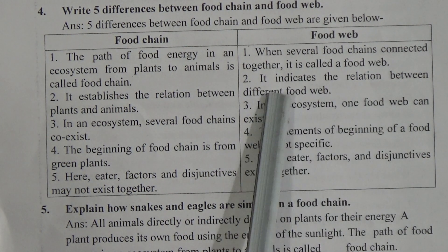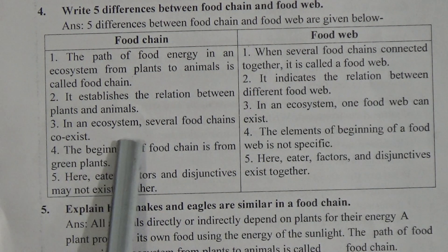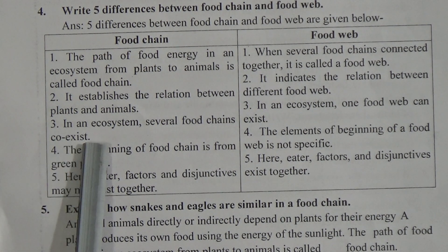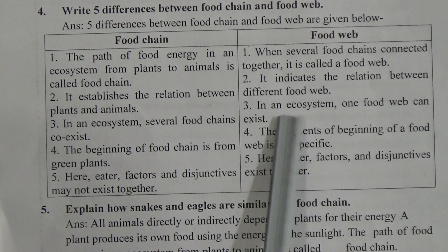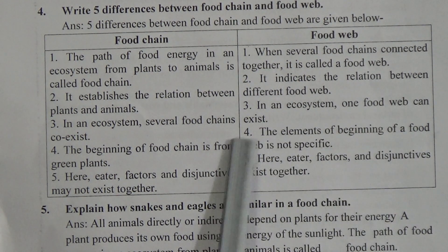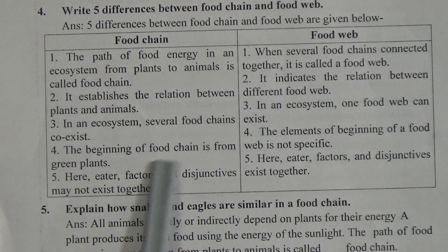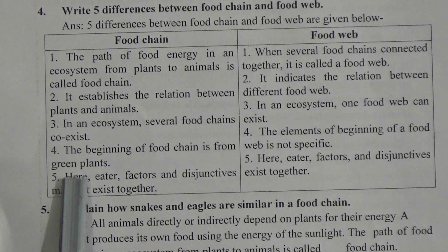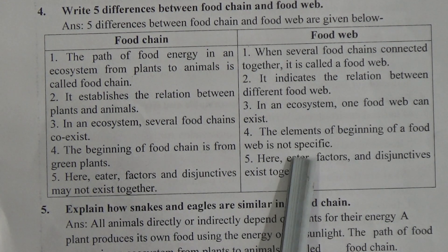Number three — Food chain: In an ecosystem, several food chains can coexist. Food web: In an ecosystem, one food web can exist. Number four — Food chain: The beginning of a food chain is from green plants. Food web: The elements at the beginning of a food web are not specific.